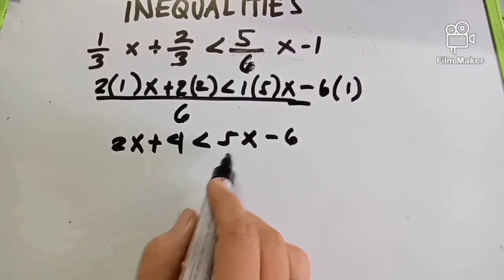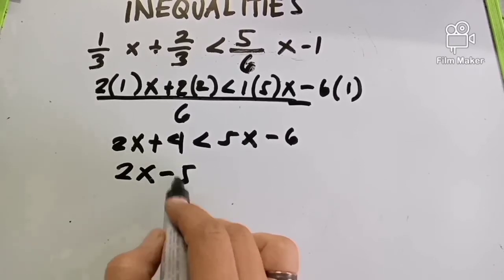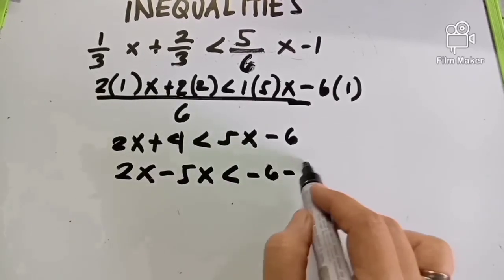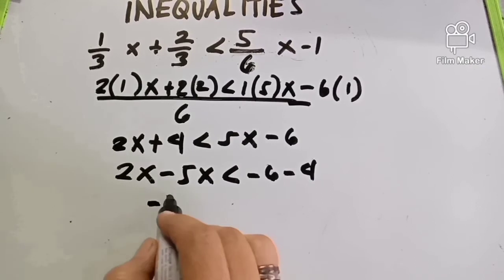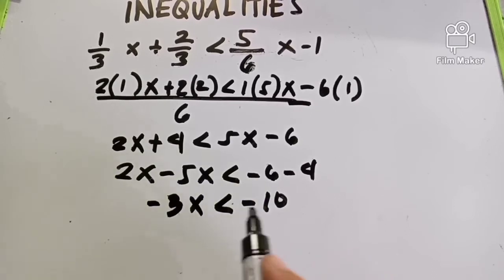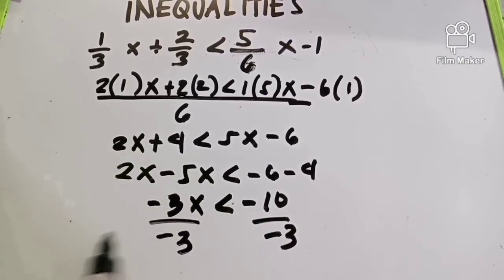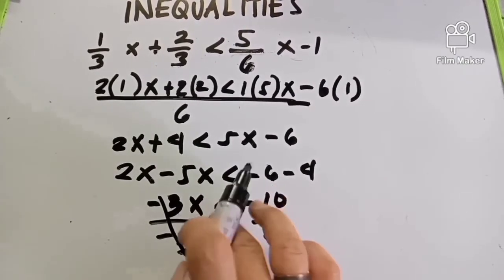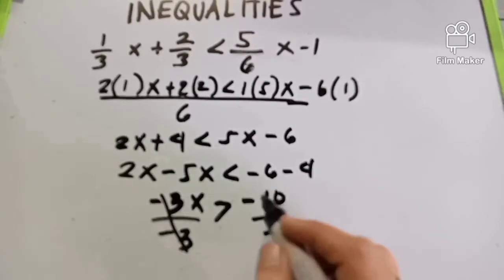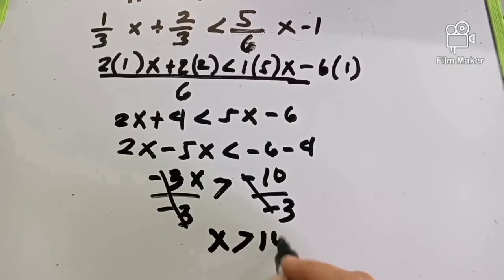Now we transpose 5X to the left: 2X minus 5X, which is negative 3X, less than. And transposing positive 4 to the right gives negative 4, so negative 6 minus 4 is negative 10. We get negative 3X less than negative 10. Dividing both sides by negative 3 — note the sign flips — so X is greater than 10 over 3.